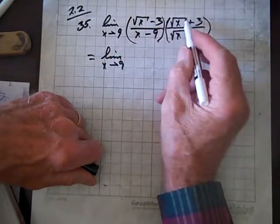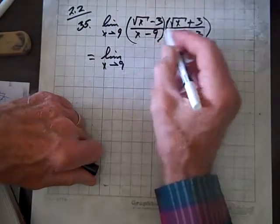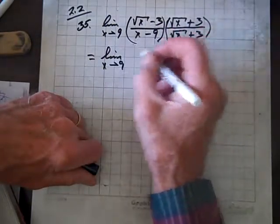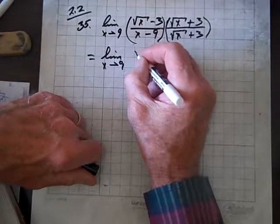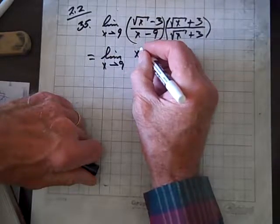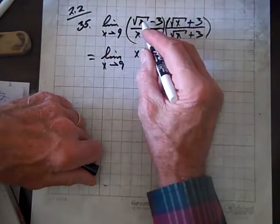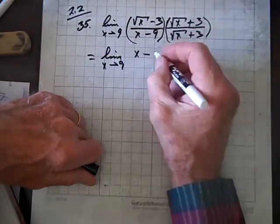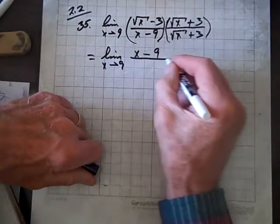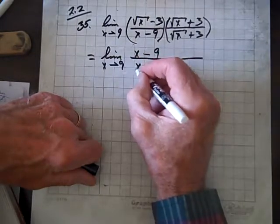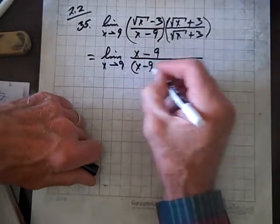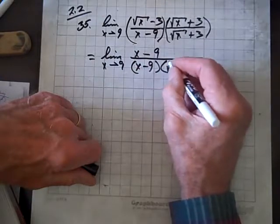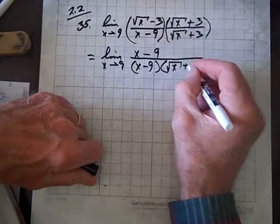Now the product of these two expressions is going to be, as you already know from the difference of two squares, root x times root x, which is x minus, and 3 times 3 is 9, all over. And downstairs we have x minus 9 times root x plus 3.